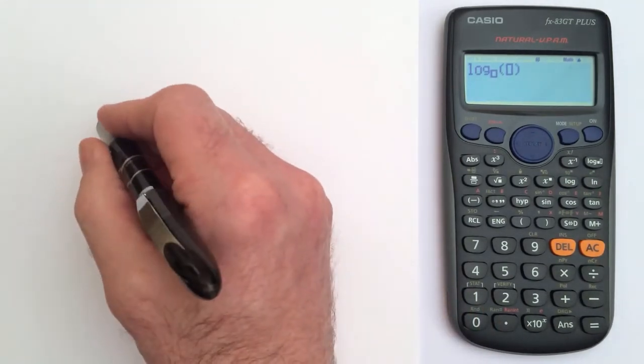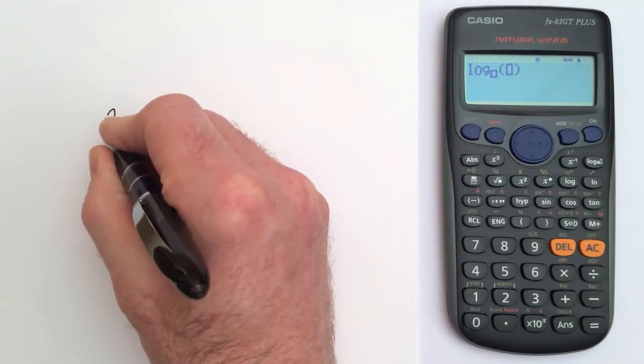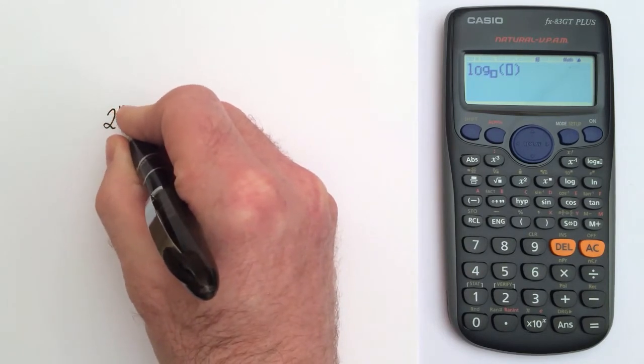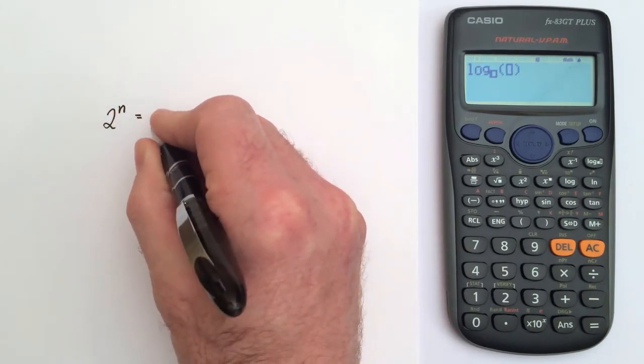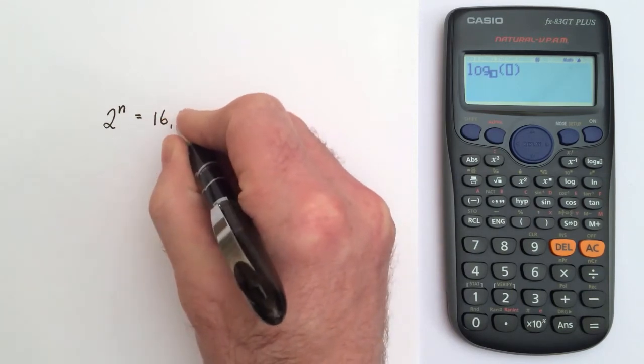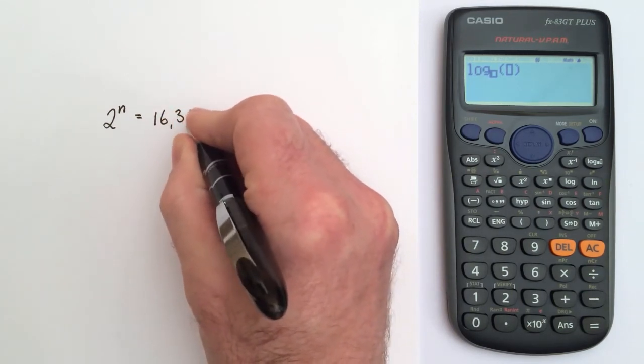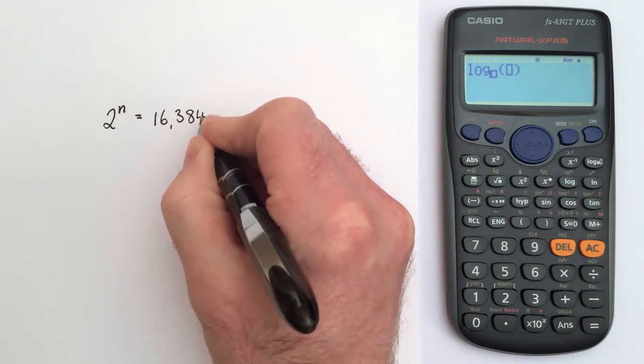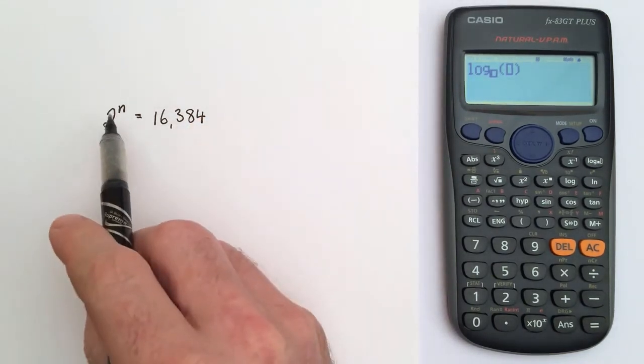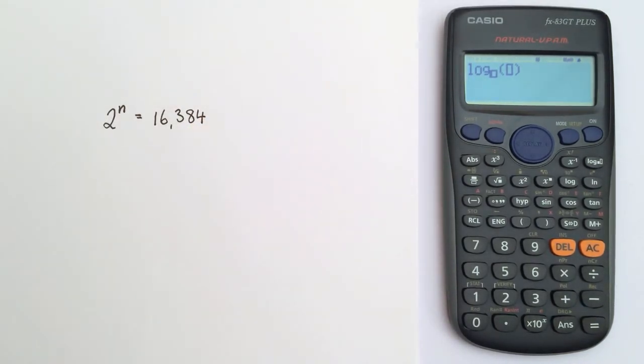Now why would I want to use this? Let me give you an example. Suppose you were told that 2 to the power of something, I'll call the something n, is equal to 16,384, and I want to work out what is this power n. What number would I raise 2 by to get 16,384? Well, I can use this function to answer that question.